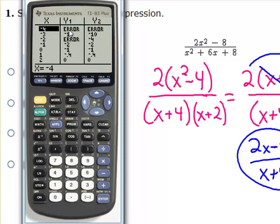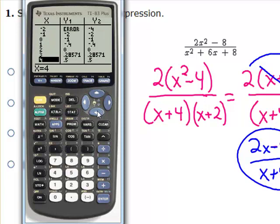Remember, where you get an error, you cannot divide by 0. So our domain is all real numbers except for negative 4 and negative 2. On the Keystone you may see x does not equal — it'll let you know that negative 4 and negative 2 cannot be inputs. But for any other x values, you're going to see the original problem and your answer producing the same outcomes.